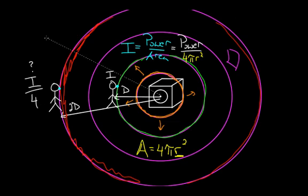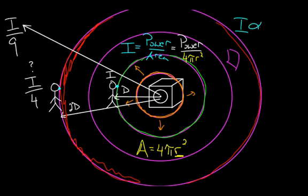And if you were 3 times farther away, since you've got 3 times the radius, you square that 3 to get a factor of 9 — so the intensity would be one-ninth out there. This is an important rule: intensity is proportional to 1 over r squared. Lots of things in physics follow this inverse-square relationship, and intensity of a sound wave is one of them, because it spreads over a sphere whose area grows like r squared.